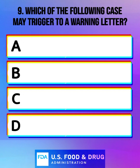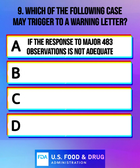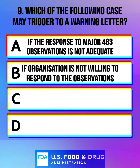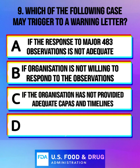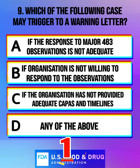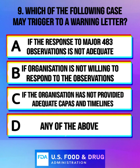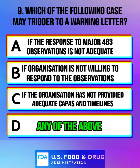Which of the following cases may trigger a warning letter? Option A: if the response to major 483 observations is not adequate. Option B: if the organization is not willing to respond to the observations. Option C: if the organization has not provided adequate CAPAs and timelines. Option D: any of the above. And the correct answer is any of the above.